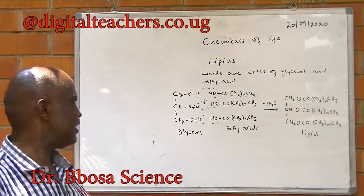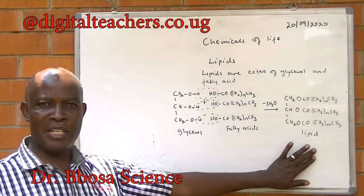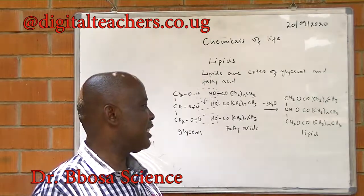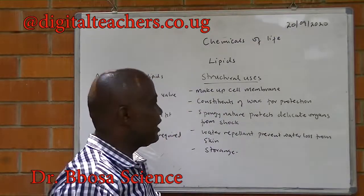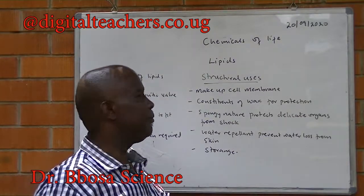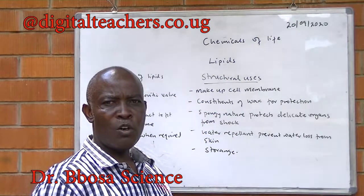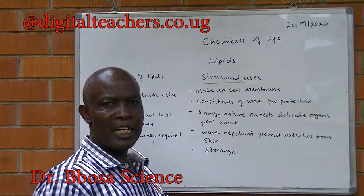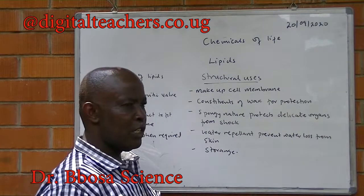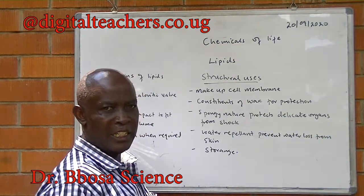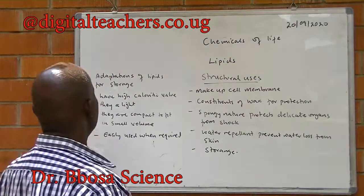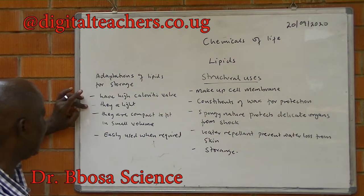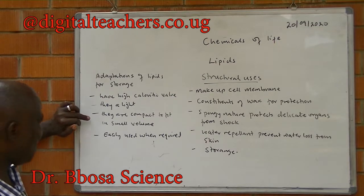Lipids are esters of glycerol and fatty acids. When solid at room temperature, it is fat. When liquid at room temperature, it is oil. Structural uses of lipids: they make up cell membranes. They are constituents of wax for protection on plant leaves. Their spongy nature protects delicate organs from shock, such as the kidney and lungs. They are water-repellent, which prevents water loss from the skin. They are used for storage. Adaptations of lipids for storage: they have high calorific value because they have low oxygen content. They are light. They are compact to fit in small volume.